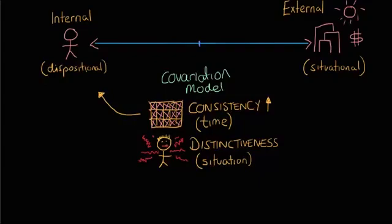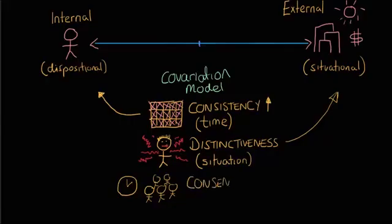Finally, in the covariation model we have a third factor. Have you ever heard of the term 'group lateness'? You probably haven't because I kind of just made that term up. But what that means is that if you arrive late to a meeting but you're with 20 other people and they're all late, there's a high degree of consensus. And what that means is that a lot of people are demonstrating the same behavior.